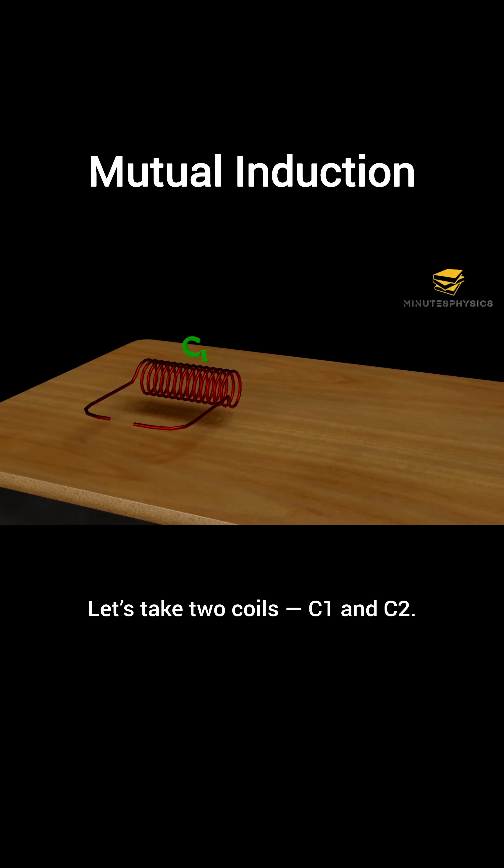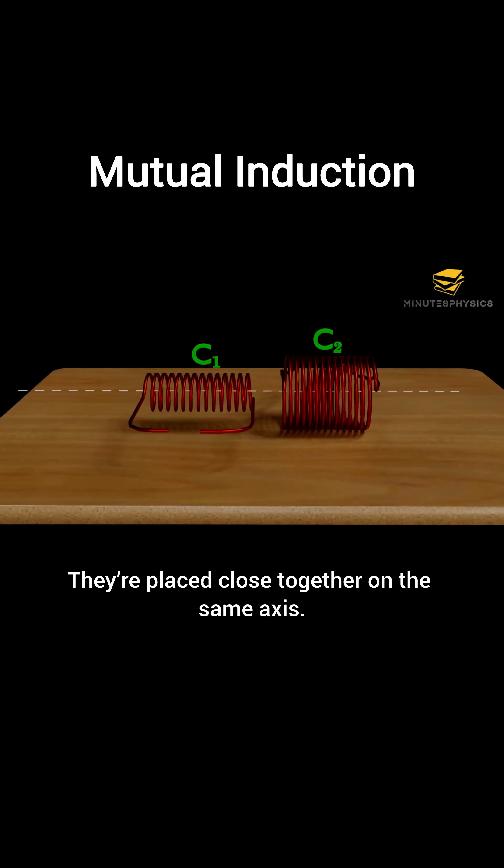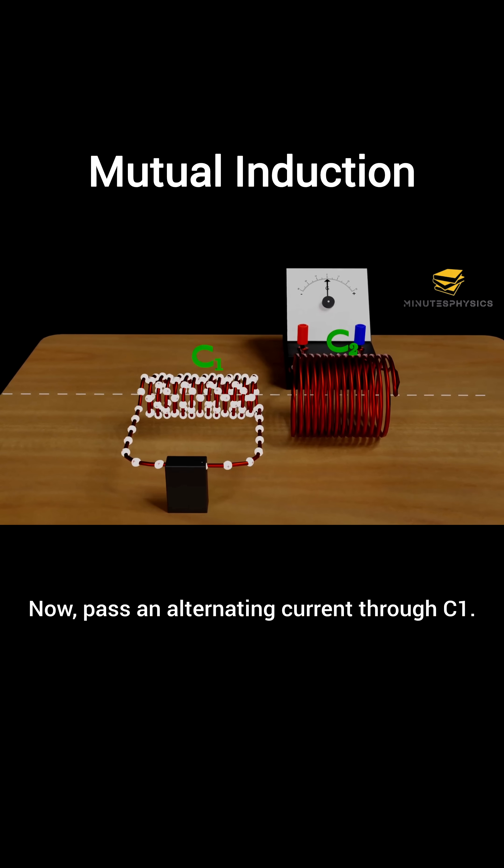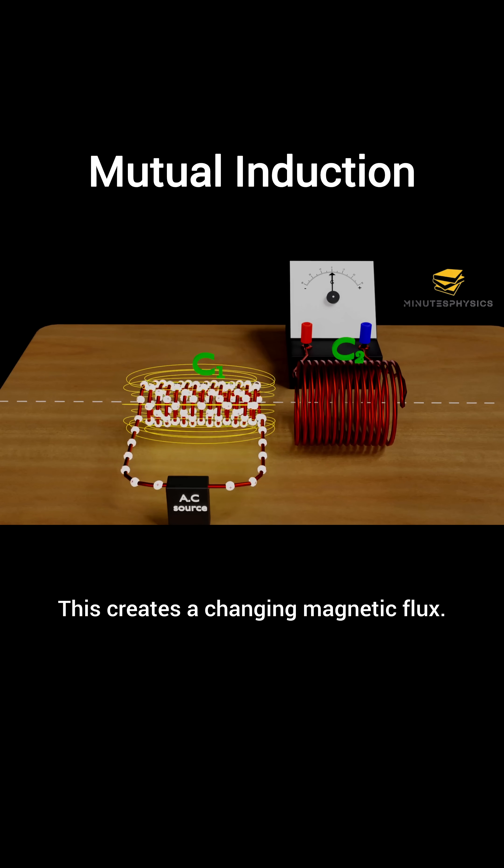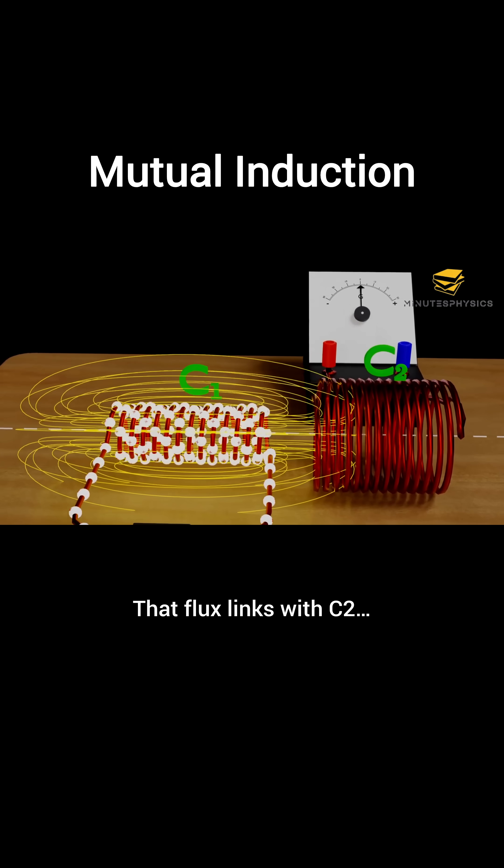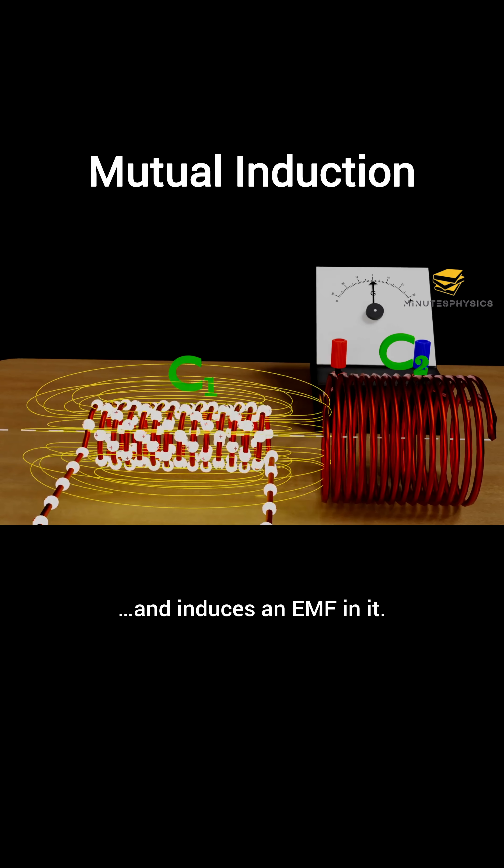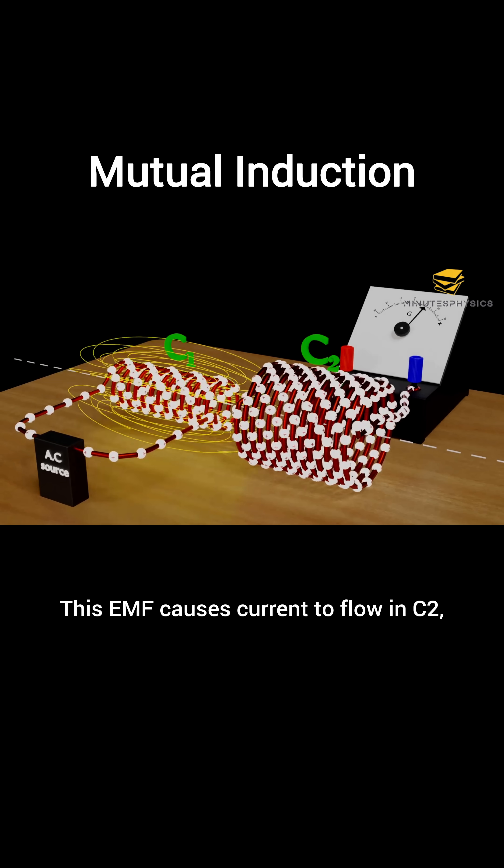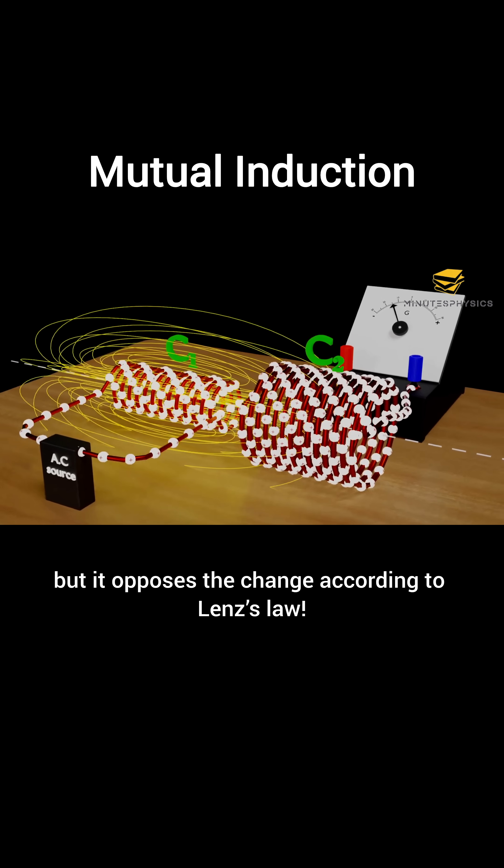Let's take two coils, C1 and C2. They're placed close together on the same axis. We connect a galvanometer to C2. Now pass an alternating current through C1. This creates a changing magnetic flux that links with C2 and induces an EMF in it. This EMF causes current to flow in C2.